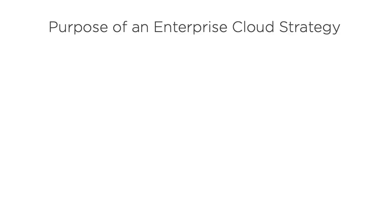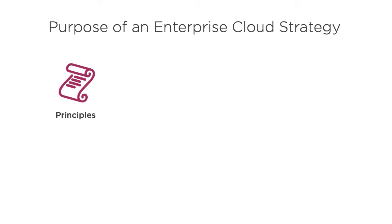A cloud strategy consists of five key elements. The first one is principles. Principles are high-level statements about the role of cloud in the organization — things like, we evaluate SaaS solutions first, and we use industry best practices wherever possible.